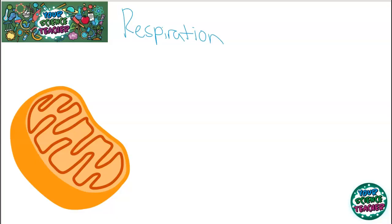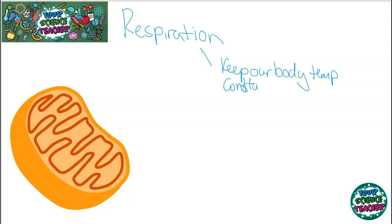Animals and plants alike need respiration. Plants use the energy from respiration in order to take up mineral ions from the ground, which is so important in order to be able to grow. Whereas animals use the energy from respiration in order to keep their body temperature at a constant. Remember we're warm-blooded, so we need to keep our body temperature constant, and that means that our enzymes in our body can work all the time.